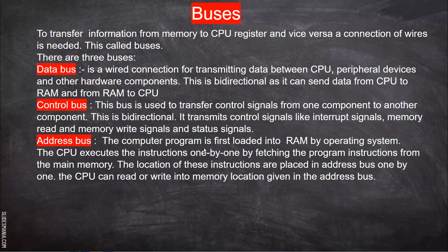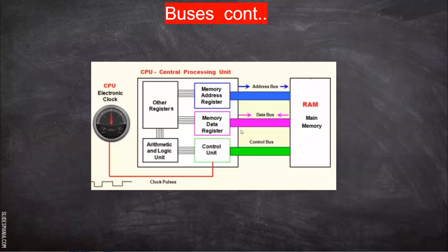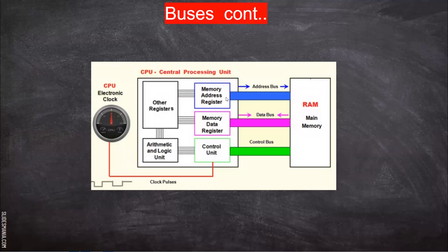The computer program is first loaded into RAM by the operating system. The CPU executes instructions one by one by fetching program instructions from main memory. The location of these instructions is placed on the address bus one by one. The CPU can read or write into the memory location given in the address bus. The CPU has many registers and it places on the address bus which data has to be read — that address always goes from CPU to memory. So it is unidirectional. Whereas data from main memory to CPU and from CPU to main memory is bidirectional.